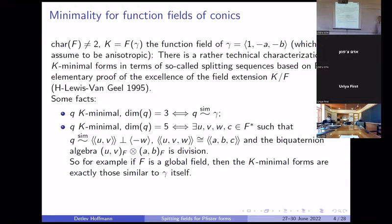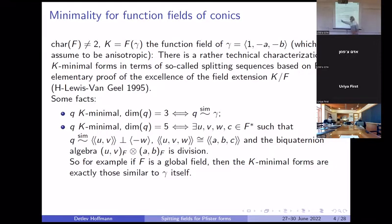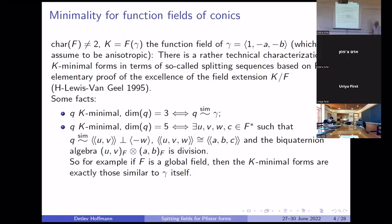If you look at the three-dimensional case, it's basically just the conic itself. In the five-dimensional case, there is a nice characterization: there are so-called Pfister neighbors that contain, up to similarity, some two-fold Pfister form, and they're contained in a three-fold Pfister form which contains essentially the given conic. In addition, this two-fold form and this conic itself, when viewed as a biquaternion algebra, will be a division algebra. If you take a global field, this situation cannot arise, so the only minimal forms are conics for the global field.